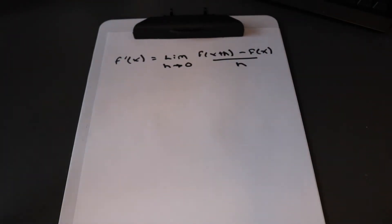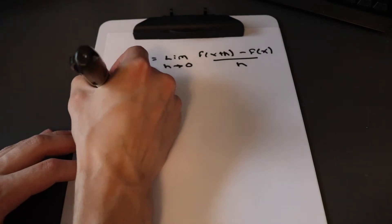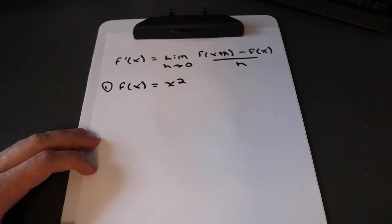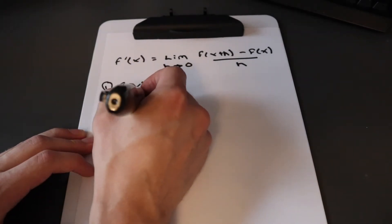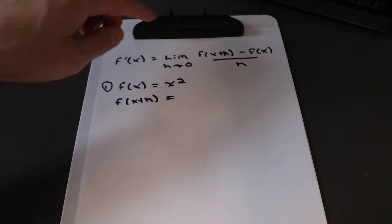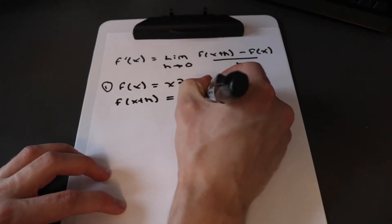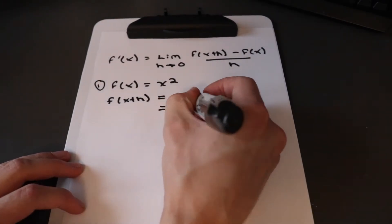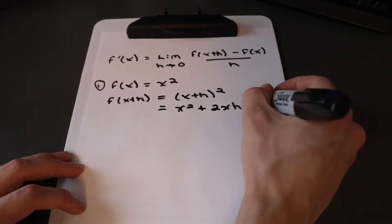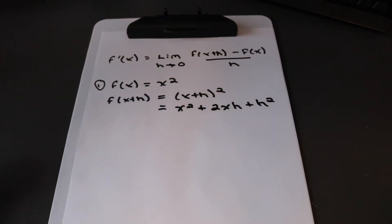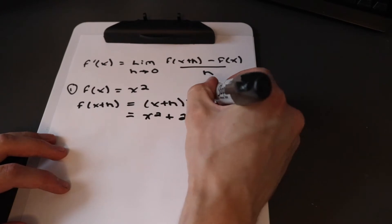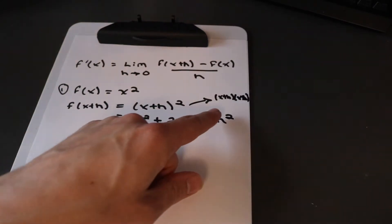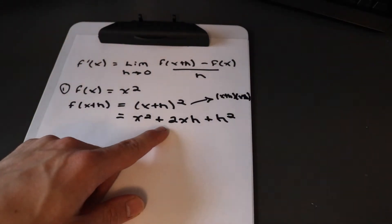We need two things before we can solve. We're given f of x, and let's suppose f of x equals x squared. So f of x plus h is just plugging x plus h in where x is, giving us x plus h squared. That expands to x squared plus 2xh plus h squared — you can get that by foiling out x plus h times x plus h.